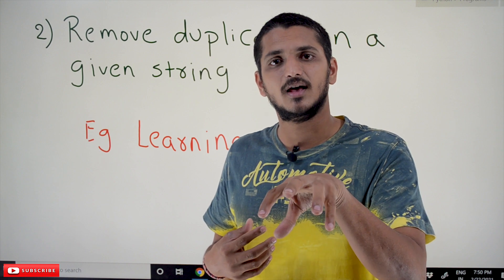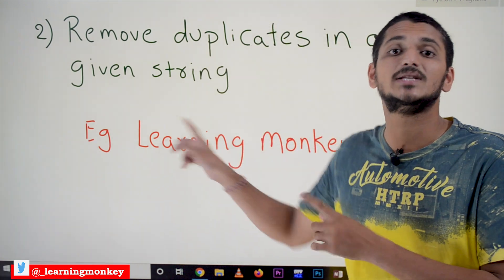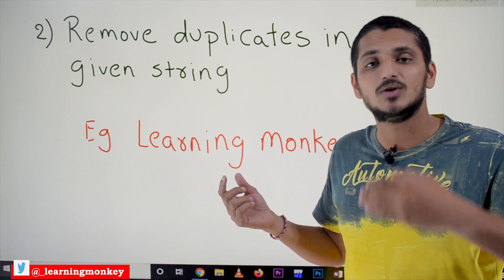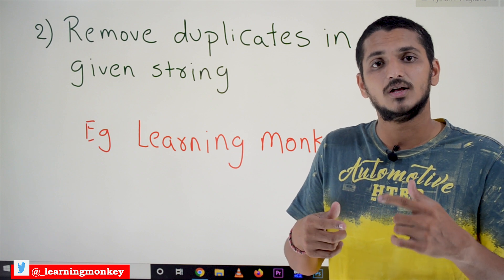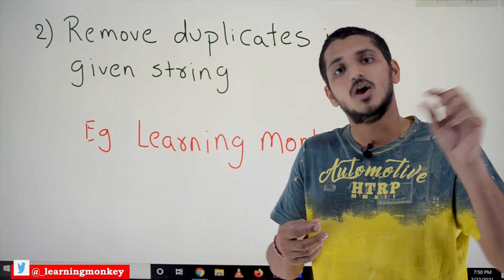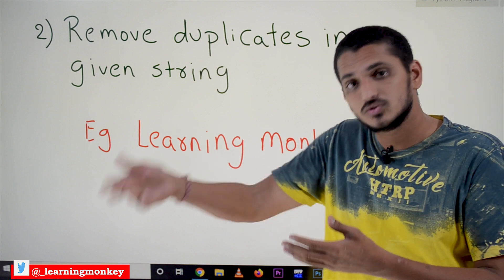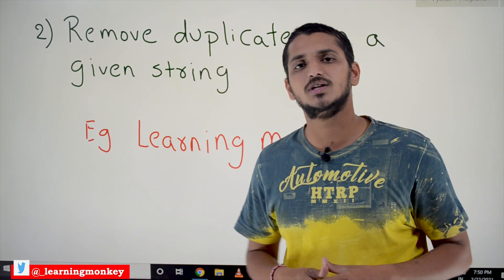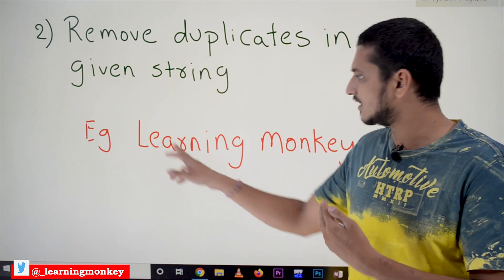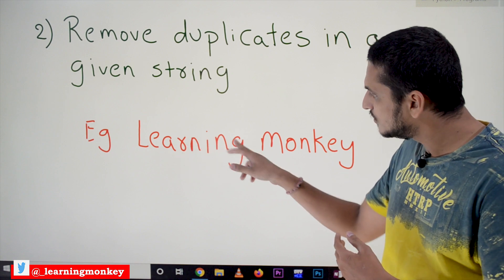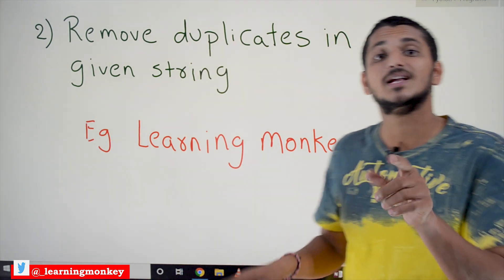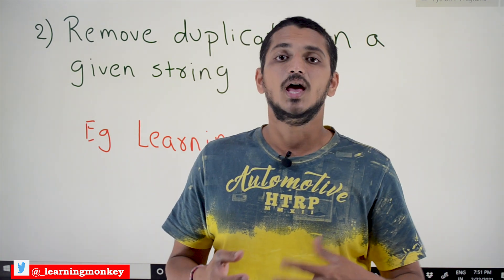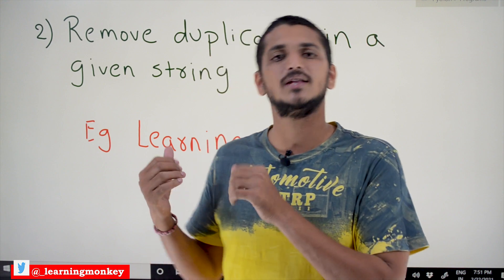A set won't take duplicate elements — that is what we need. We need 'n' only one time; the remaining occurrences should not be taken. So if you convert the string data type into a set data type, the set will consider only unique values and eliminate duplicates. You have to understand Python concepts like what is set, what is list, and when to use each.